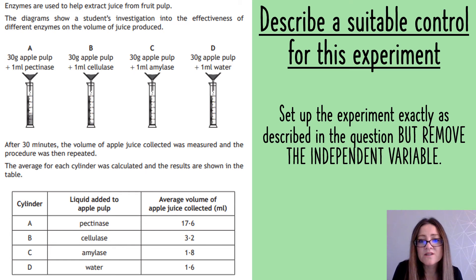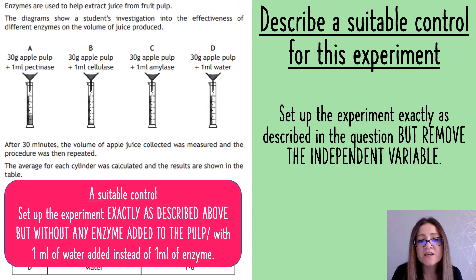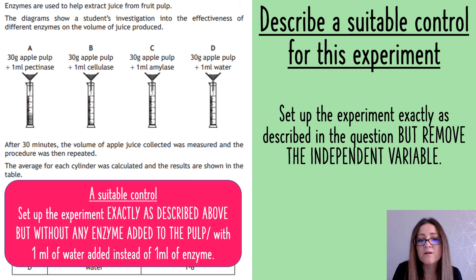The best and quickest way to describe a control is to say that you set up the experiment exactly as described in the question, but you remove the independent variable. So for this one, a suitable control would be to set up the experiment exactly as described above, but without any enzyme added to the pulp - or with one millilitre of water added to the pulp instead of one millilitre of enzyme.